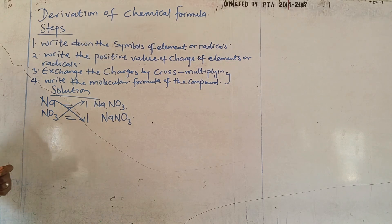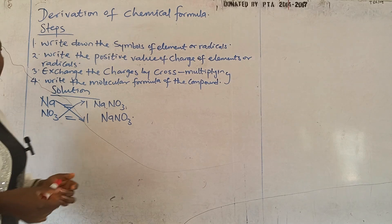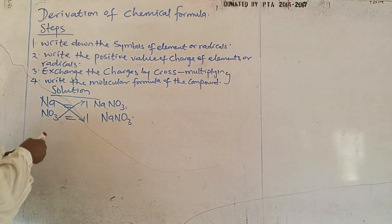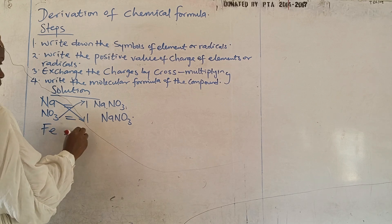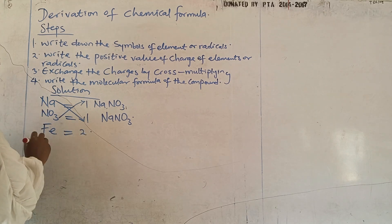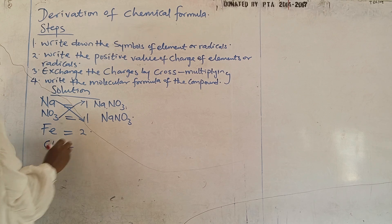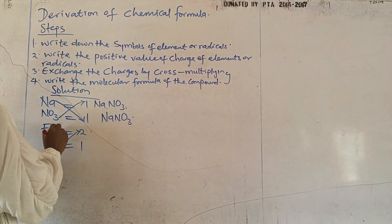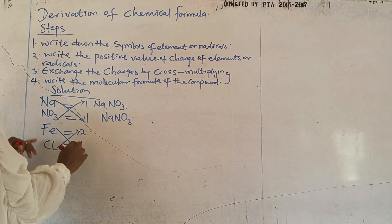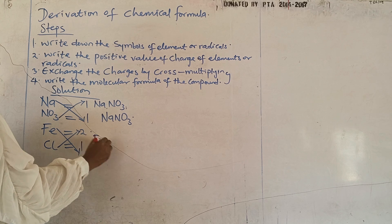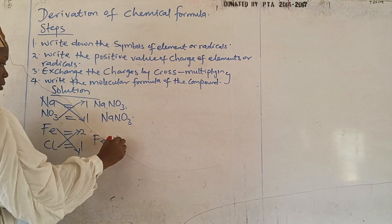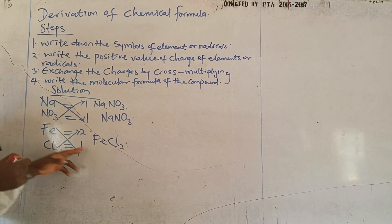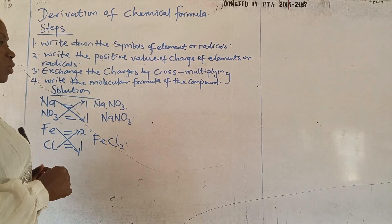The next example is for iron. We know we have two types of iron: iron 2 and iron 3. I'll be doing iron 2 and chlorine. The charge on chlorine — I change it to positive. We write metals first, so we have Fe, and after cross-multiplying we get FeCl₂. That's our iron(II) chloride.